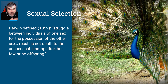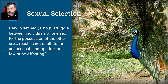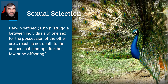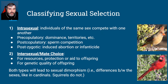Darwin determined that there is basically a second form of selection beyond natural selection, and that is sexual selection. He defined it as a struggle between individuals of one sex for possession of the other sex. The result is not death to the unsuccessful competitor, but just few or no offspring — you just don't get to live on as a result. So let's look at classifying sexual selection.